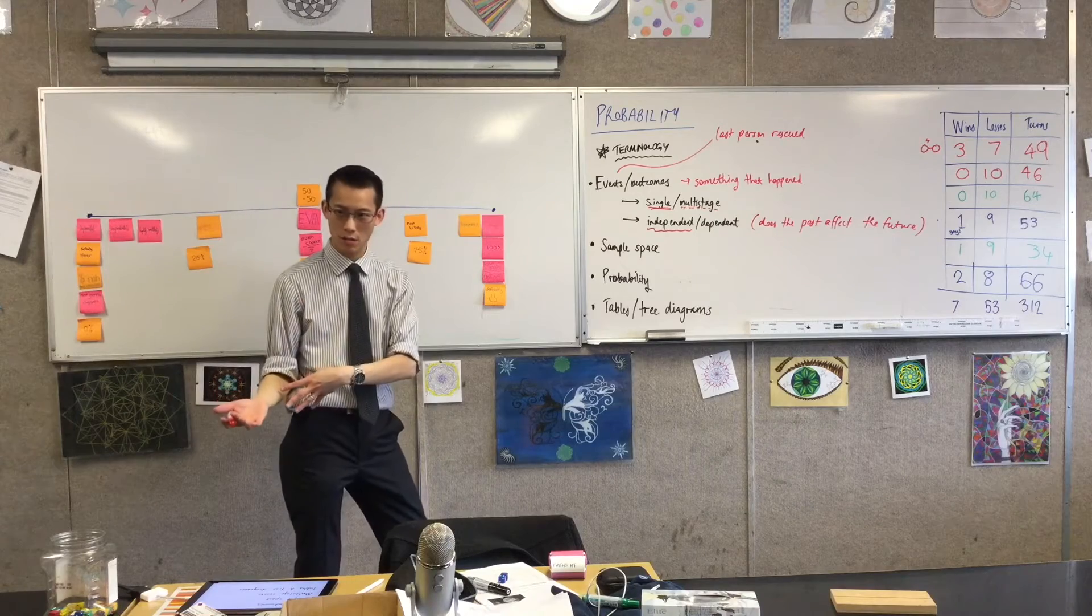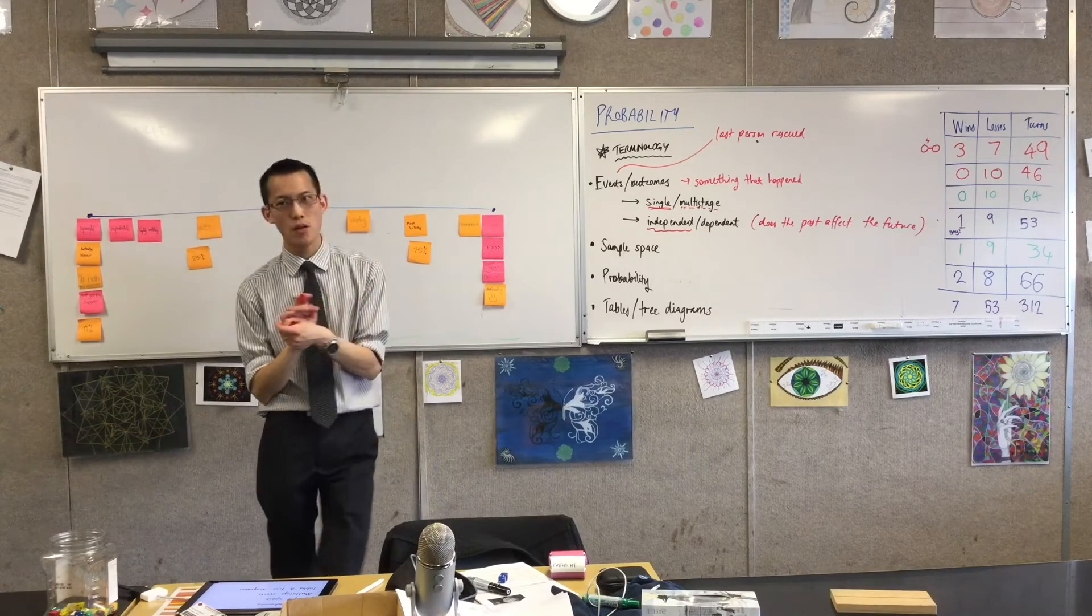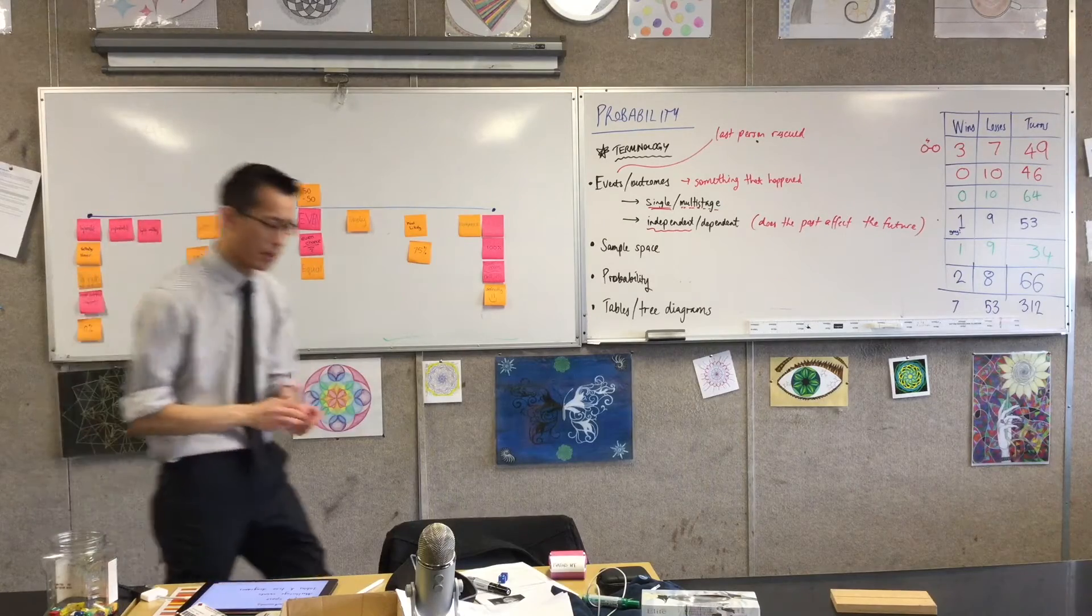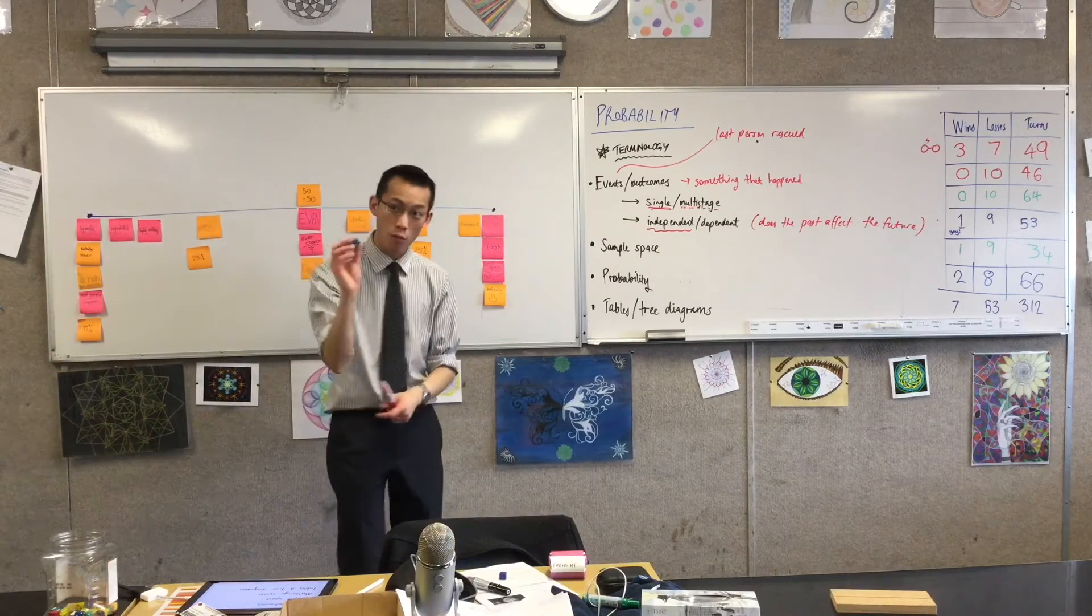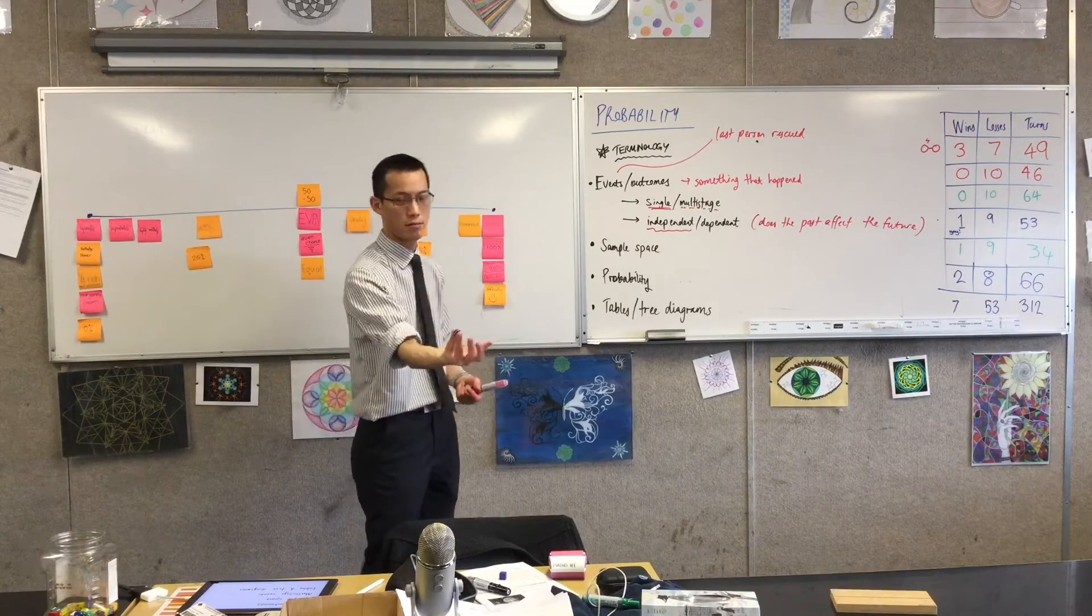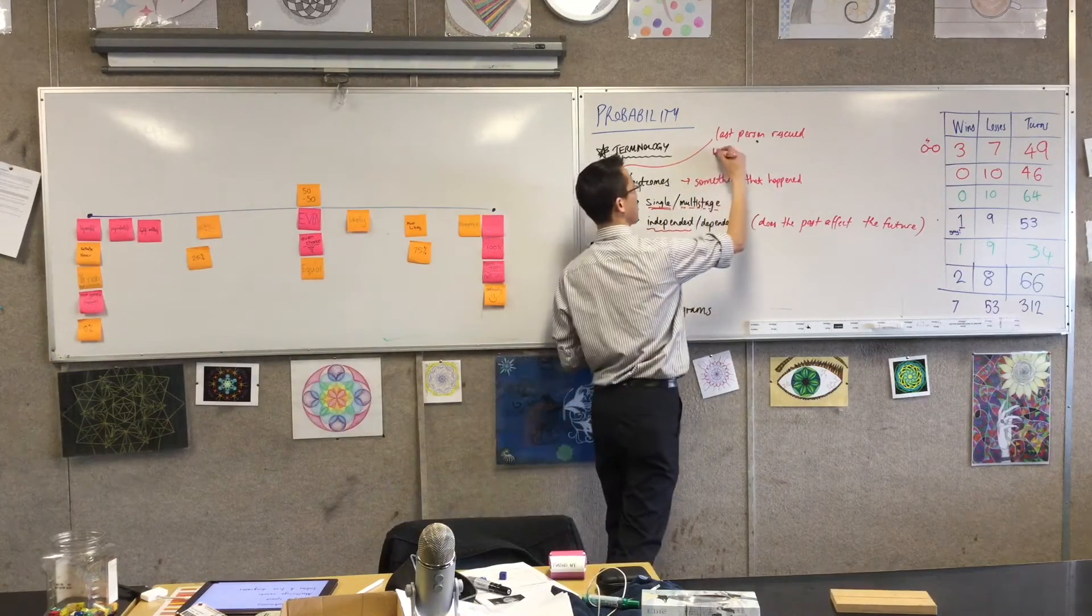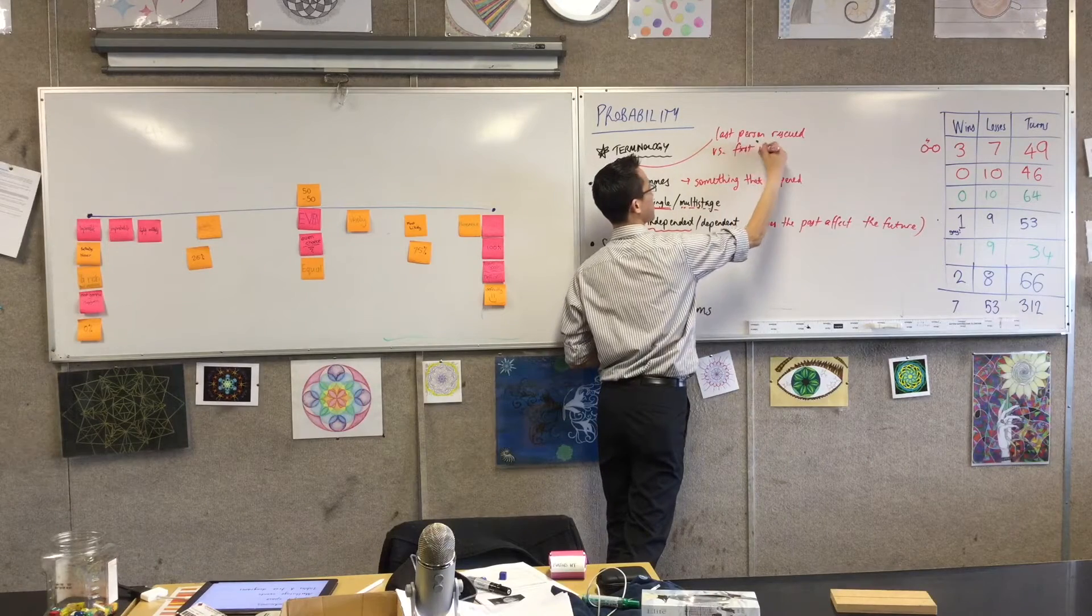It's five out of six, because it doesn't matter which roll - so long as you don't roll a six, you'll rescue someone. Whereas to get the last person versus the first person, do you see why that's a dependent event?